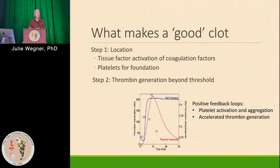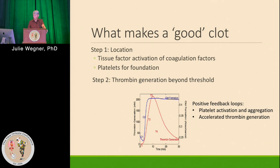So first of all, what makes a good clot? That's where it all starts — understanding what is required to make a good clot. By good clot, it's something that's going to stop bleeding from that patient and not overdo it to get into the hypercoagulable state. Step one: you need proper location. When you have injury in the vessel, you have a place where platelets can attach, and you need those platelets to attach to form a good clot. Tissue factor is released, which activates the coagulation cascade.